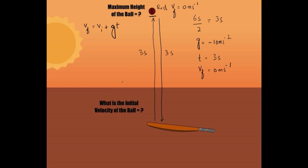To calculate the initial velocity, we put the values in: the final velocity is 0 meters per second equals Vi plus negative 10 meters per second squared multiplied by 3 seconds — the time the ball took to reach the maximum height. Performing the mathematical calculations, the initial velocity is equal to 30 meters per second.